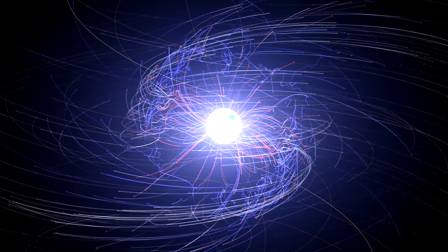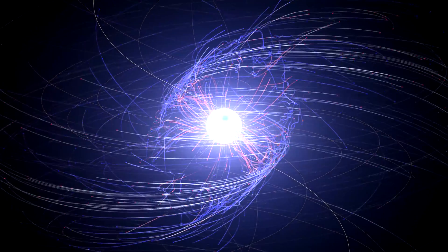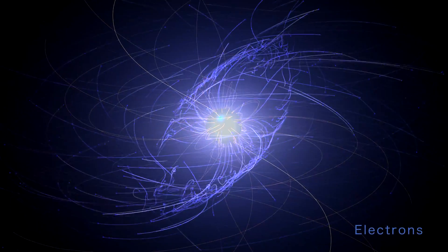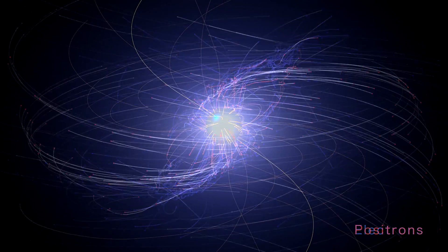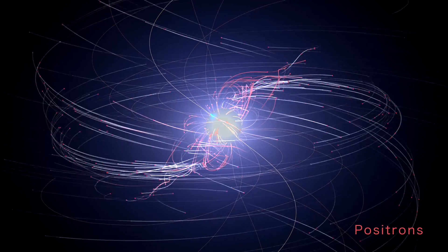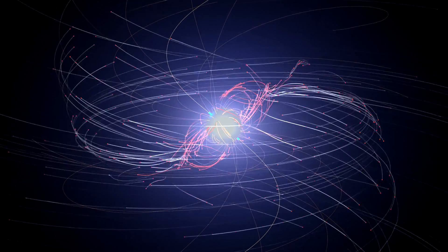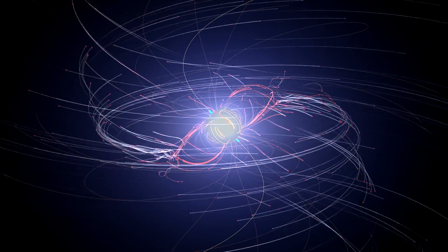New computer simulations clearly show these incredible movements for the first time. Most of these particles are electrons and their antimatter counterparts, positrons. In these simulations, their colors get lighter as they attain higher energies.